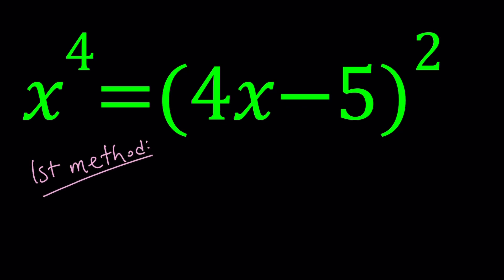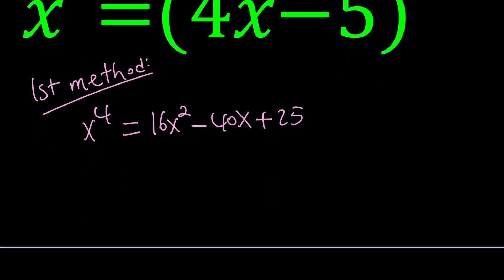We have x to the fourth equals 4x minus 5 squared. Let's go ahead and expand the right hand side, pretend we don't know how to handle this in an easier way. This is going to be 16x squared minus 40x plus 25, and then put everything on the same side. x to the fourth minus 16x squared plus 40x minus 25 equals 0.